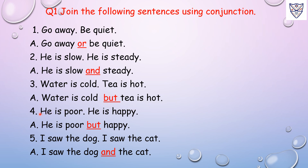Number 4: He is poor. He is happy. Answer: He is poor but happy. Here we have joined the sentence with conjunction 'but', so 'but' is a conjunction.